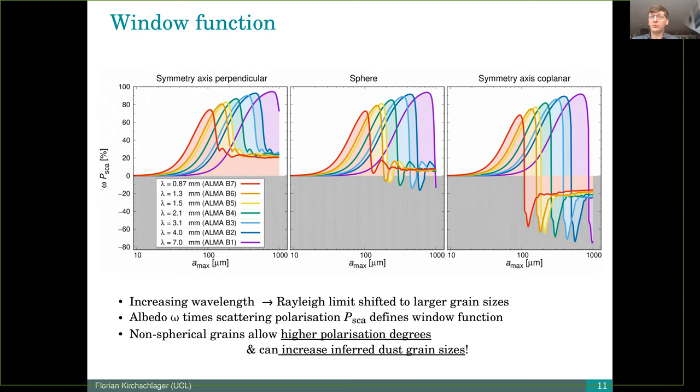For elongated grains in the left and in the right, we see that the window function for larger grains is still much larger than zero. So this has a result that also larger grains could be responsible for the signal which is observed. So this is a very important result that also larger grains are possible to explain the observed polarization when you consider non-spherical grains.